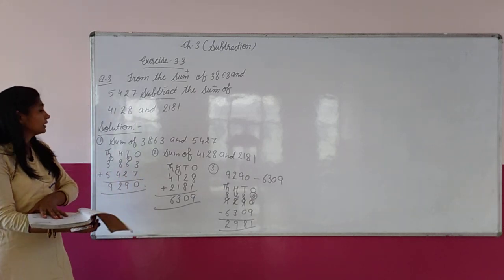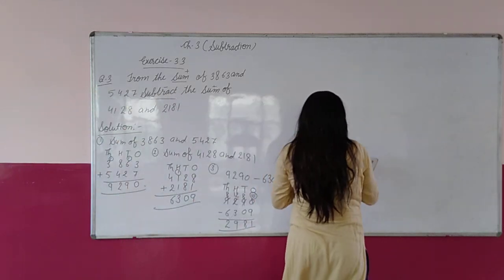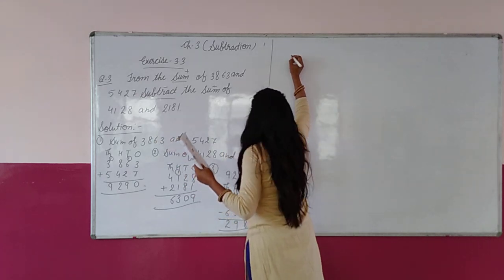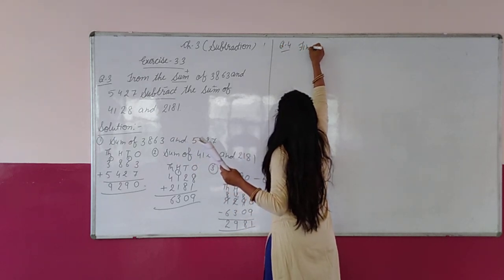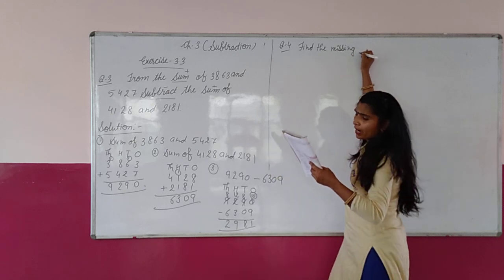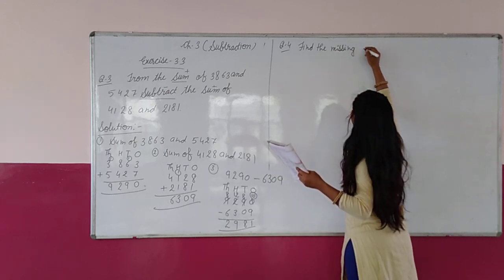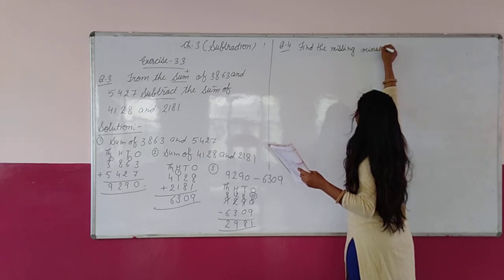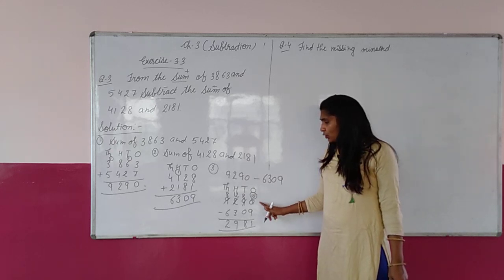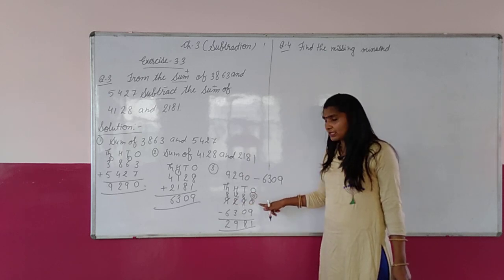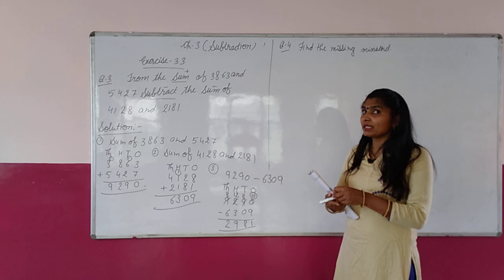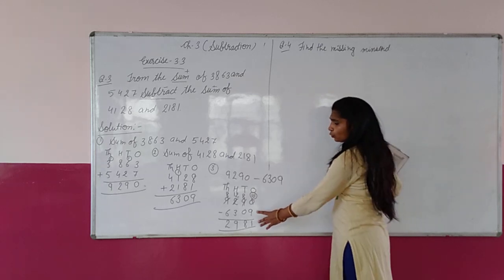Now the fourth question: find the missing minuend. मिन्वेंट क्या होता है? In a subtraction question, minuend, subtrahend, difference — इन तीनों में सबसे बड़ा number minuend होता है. अगर minuend given नहीं है और difference और subtrahend given हैं, तो minuend निकालने के लिए इन two numbers को add करते हैं.